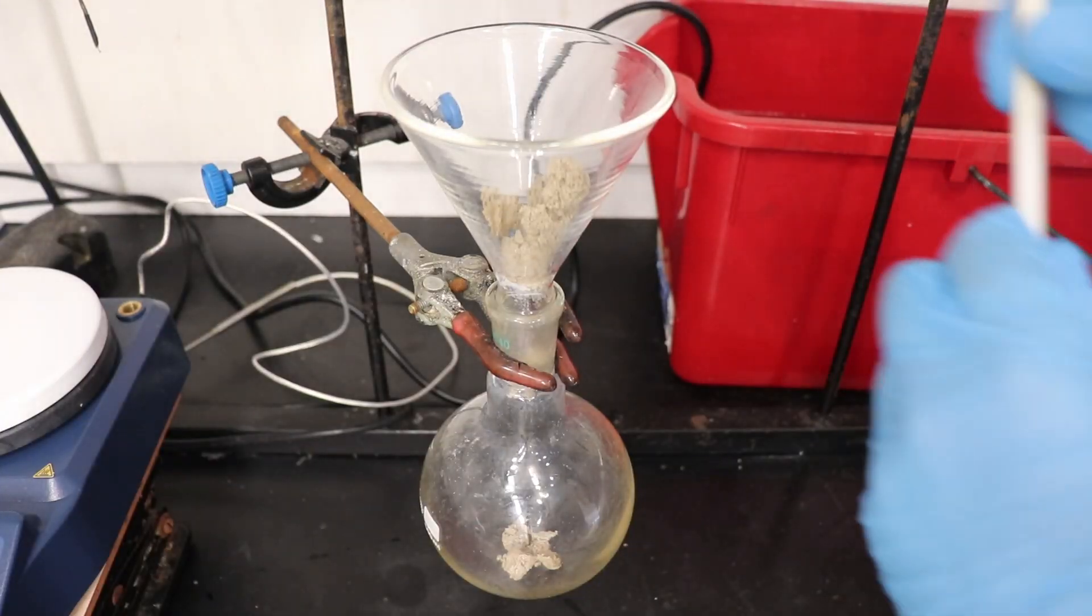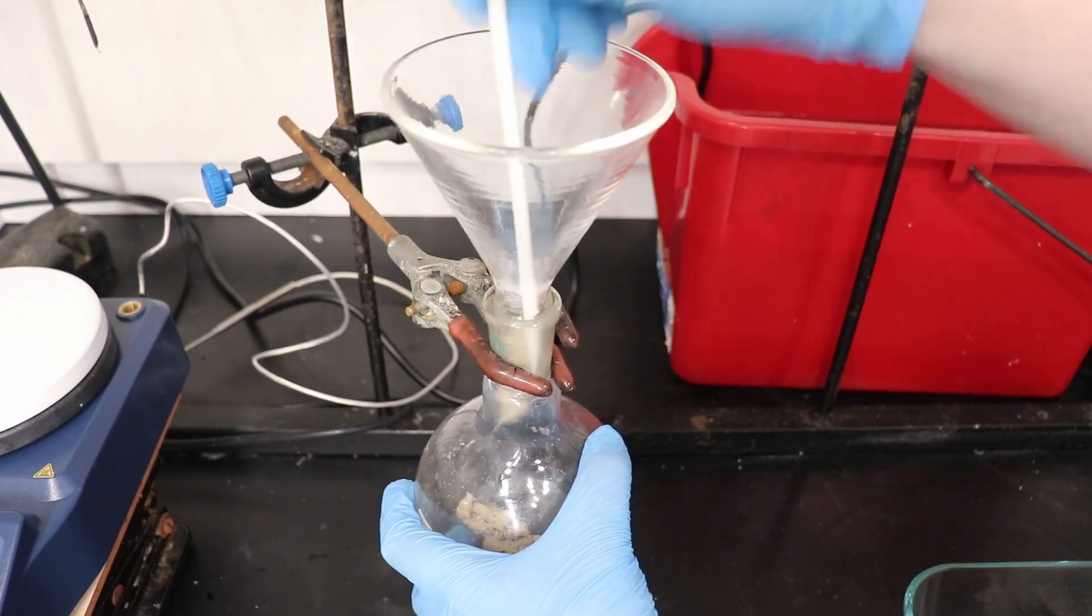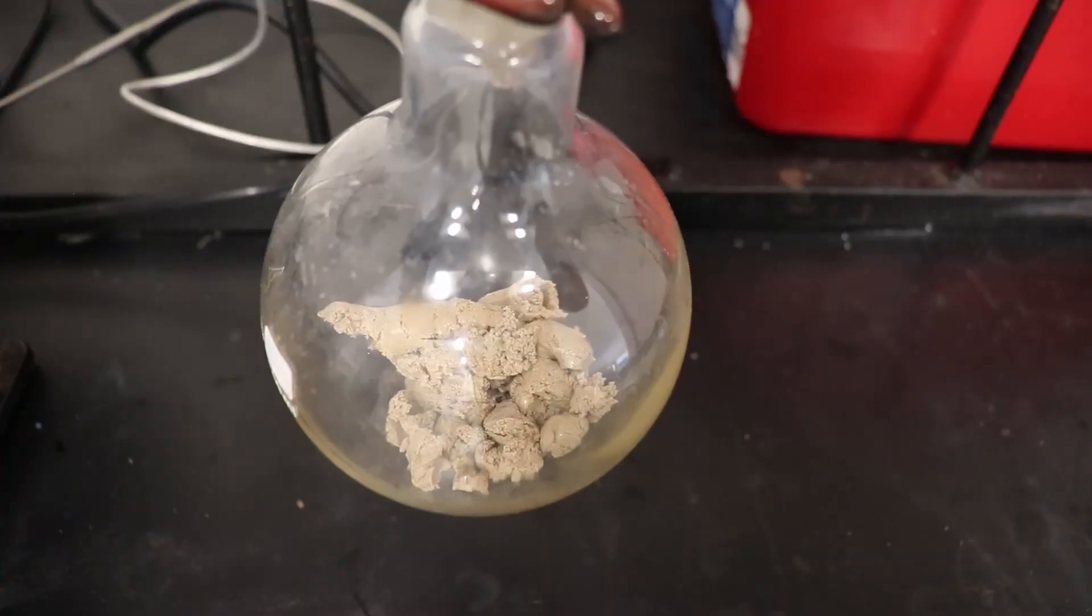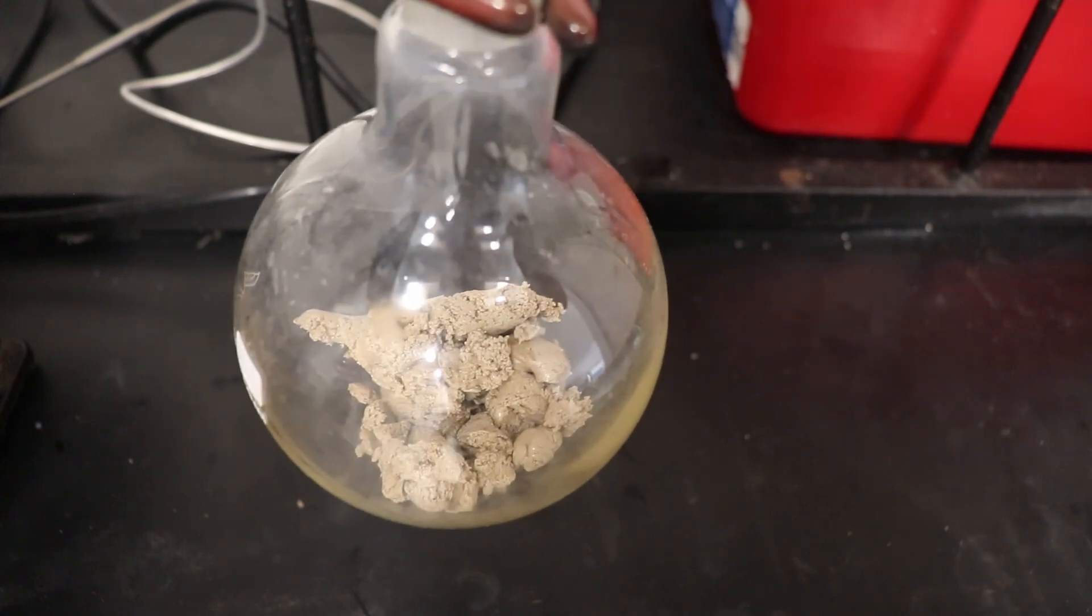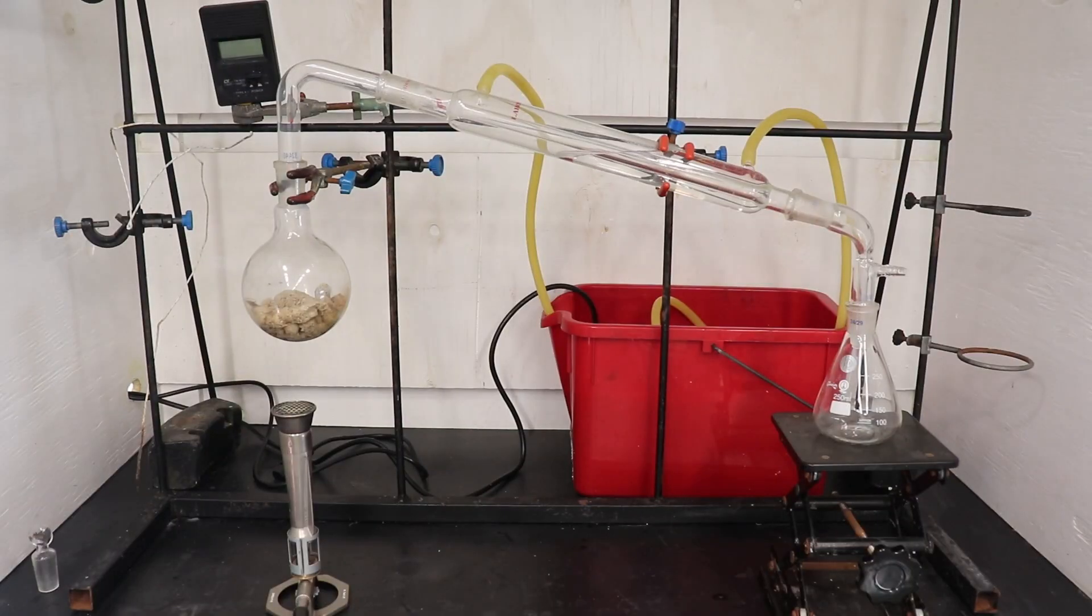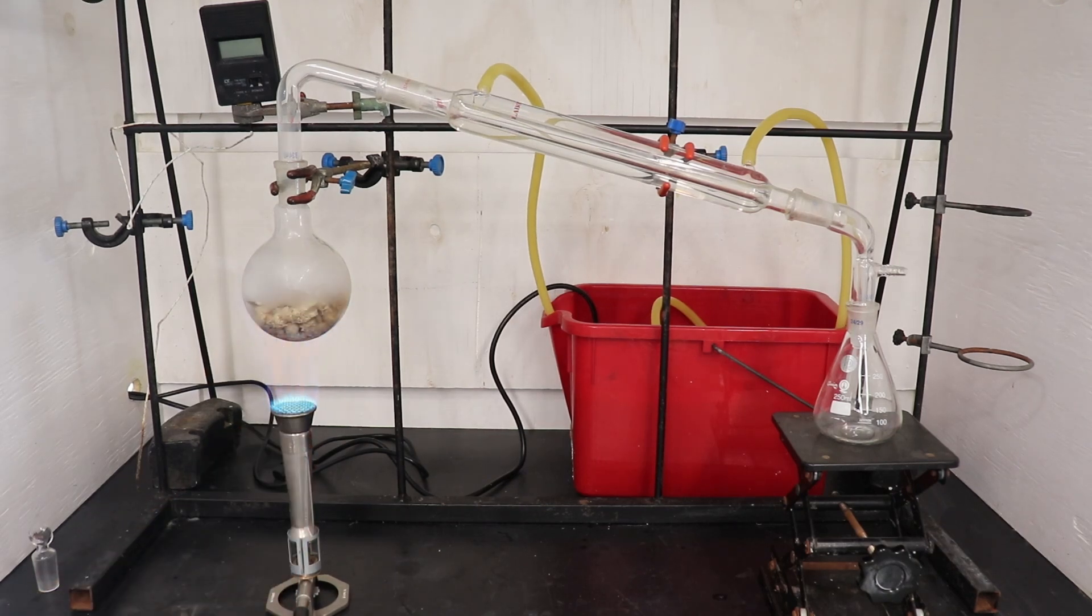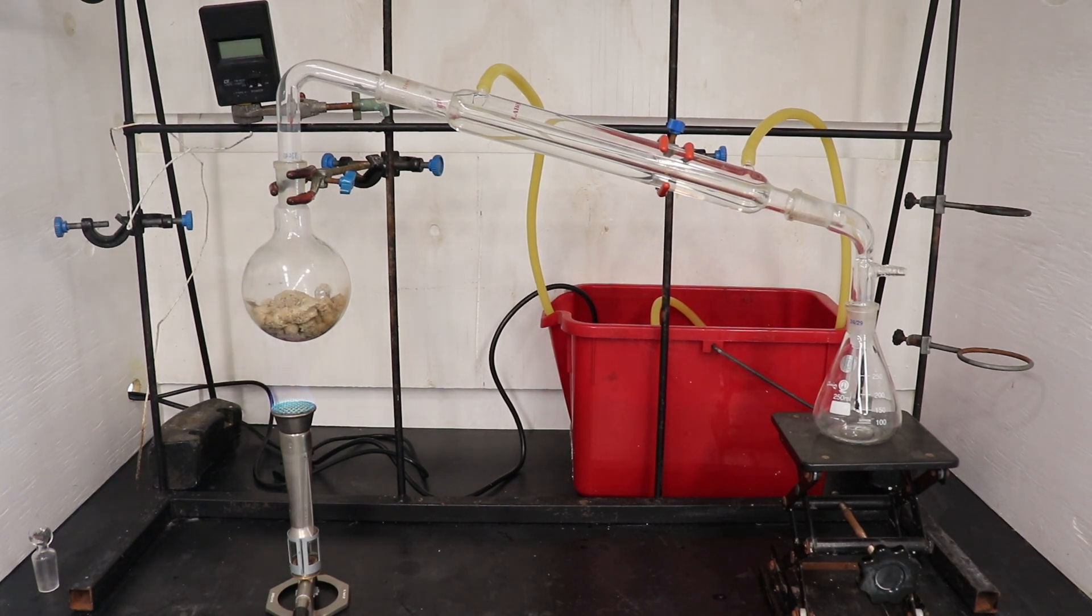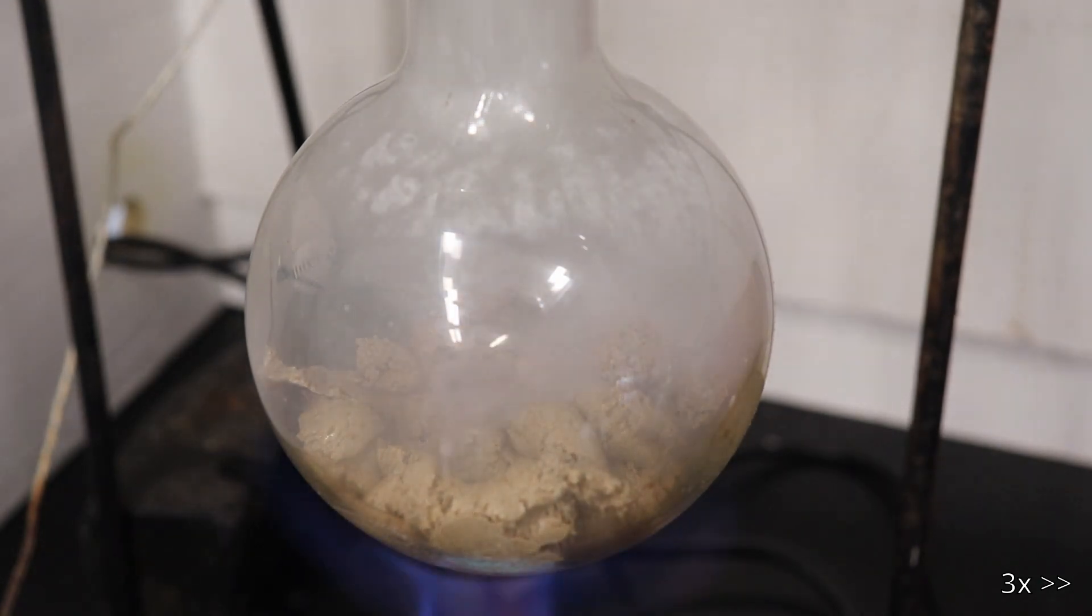This paste was then transferred into a 500ml round-bottom flask and subjected to a strong flame distillation. On the subjection of the morpholine hydrochloride and calcium oxide paste to flame distillation, a thick white smoke quickly formed, followed by a yellow distillate.